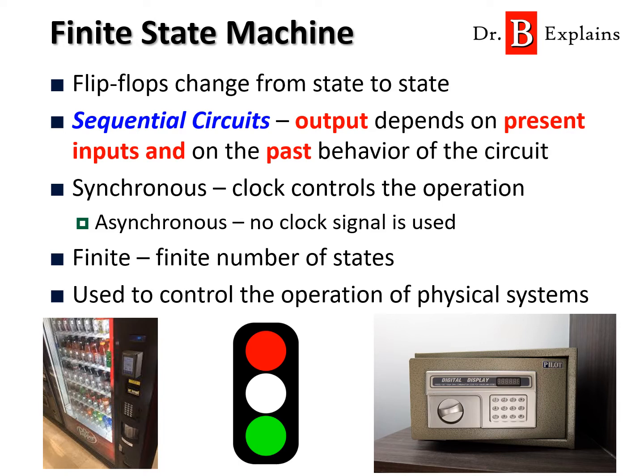When we use a clock to control the operation of these circuits, we call it a synchronous sequential circuit. When we don't use a clock, it is called an asynchronous sequential circuit. We can also call these type of circuits finite state machines, because the behavior can be represented by a finite number of states — that is, flip-flop states. These machines are used to control the operation of physical systems like vending machines, traffic lights, and safe boxes.